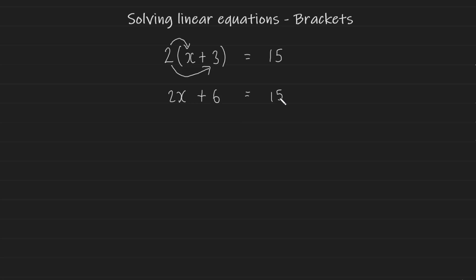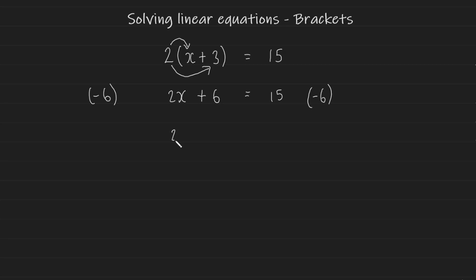Now it just becomes a two-step equation. To isolate x, I'm going to subtract 6 from both sides to eliminate the 6. So 2x plus 6 minus 6 — the 6 cancels out — leaving us with just 2x, and on the right hand side 15 minus 6 gives us 9.